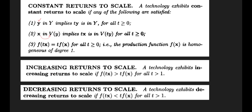What about increasing returns to scale? A technology exhibits increasing returns to scale if we scale up the input bundle by a factor t and, as a result, it produces a new production level that is greater than the initial production level multiplied by the same scalar t. That is, if the new output f(tx) is greater than t times the initial output, for all t greater than one, then the technology exhibits increasing returns to scale.